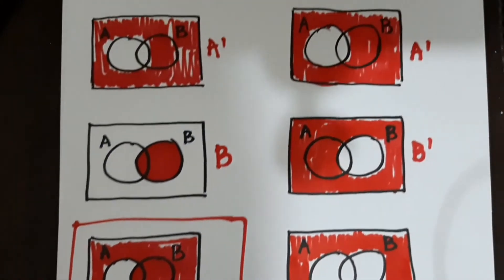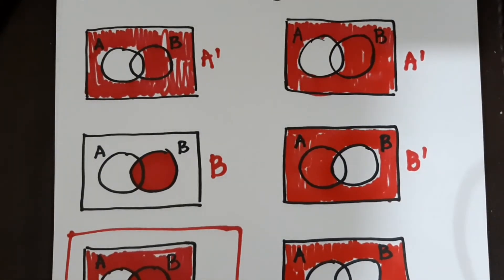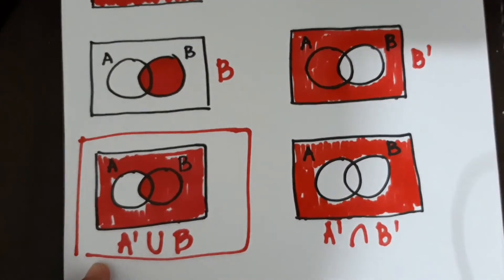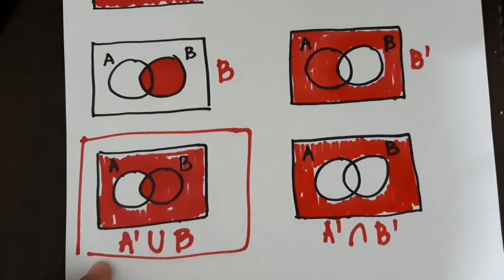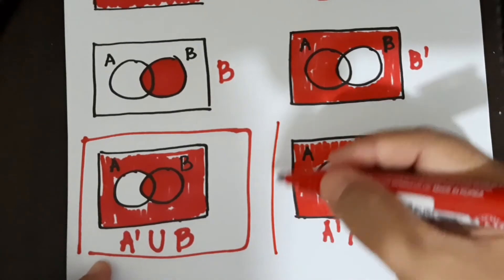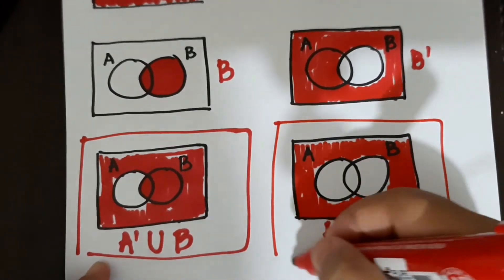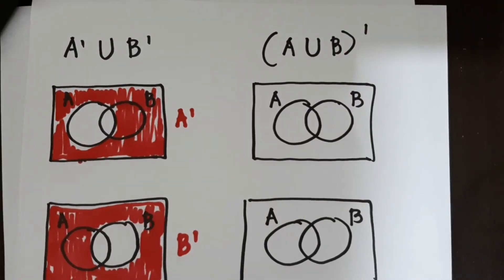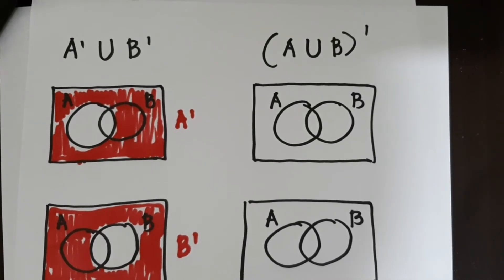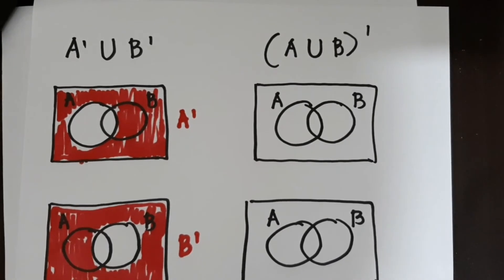Okay, meron pa ba? Meron pa bang common na na-shade-an? Okay, wala na. So that would be your answer. Not A intersection not B. Okay, dito tayo sa last problem.